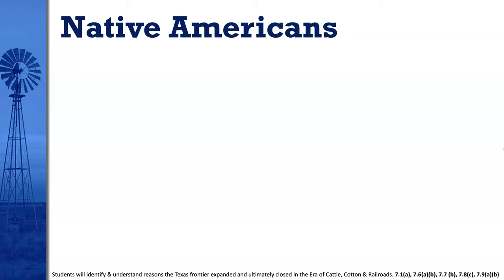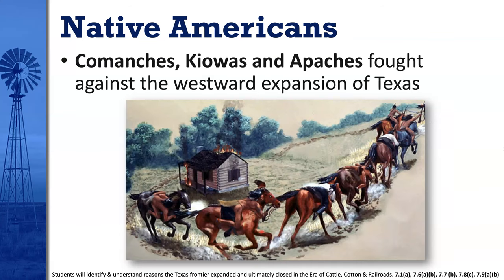With the expansion of the frontier, this brought Anglo settlers into even more conflict with Native Americans. All these people coming in wanted land — land the Indians believed was theirs — so obviously that caused conflict. The Comanches, Kiowas, and Apaches fought against the westward expansion of Texas. They raided towns, farms, and ranches, stole horses, killed people, and took captives. It was very violent and bloody, and a dangerous place to live.